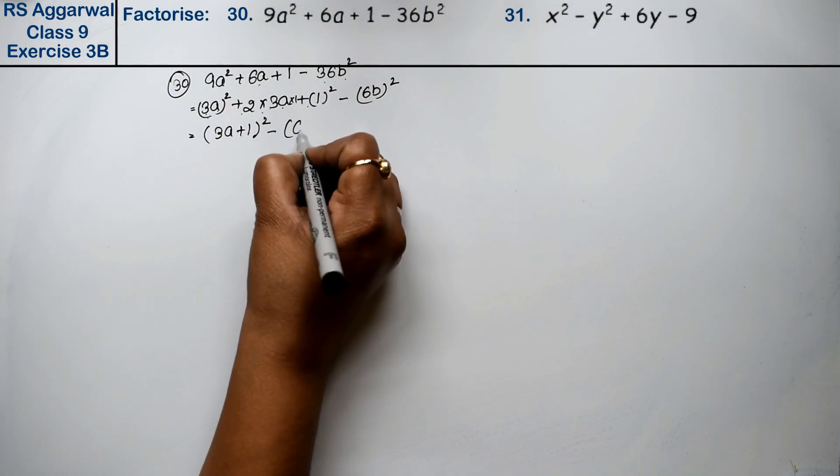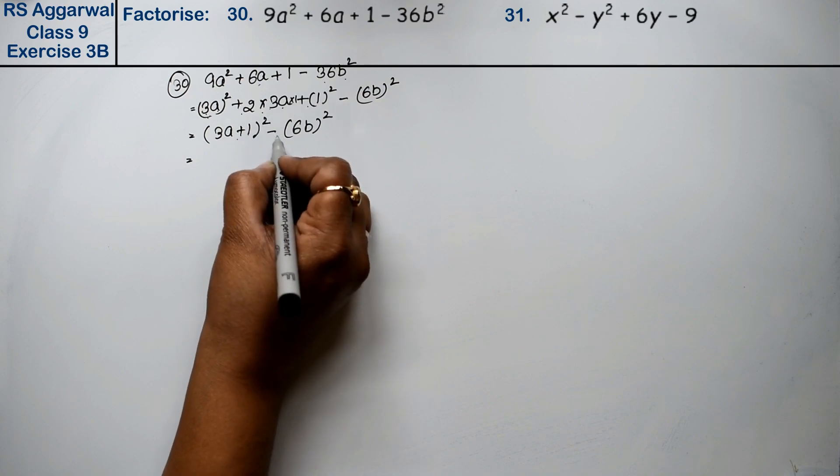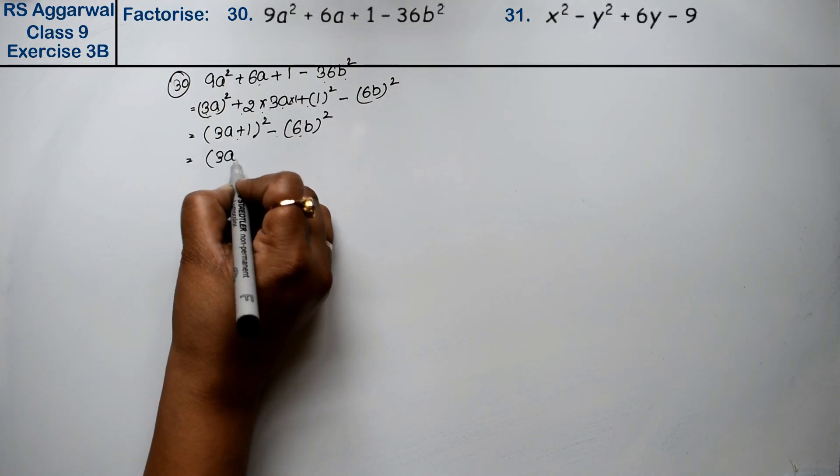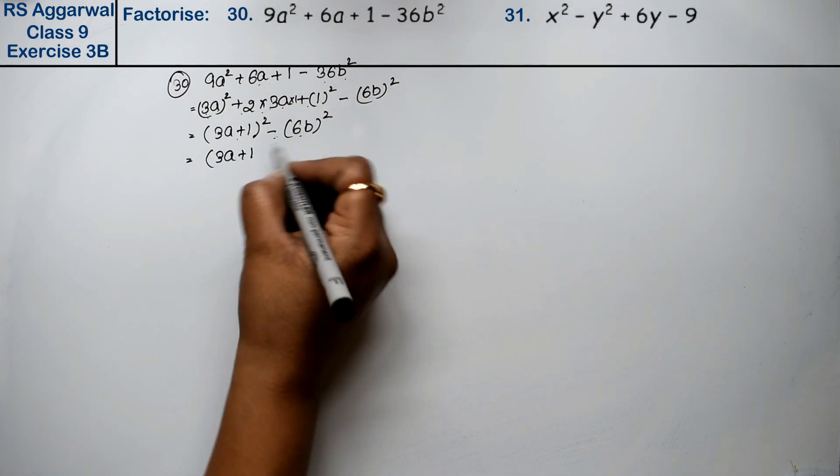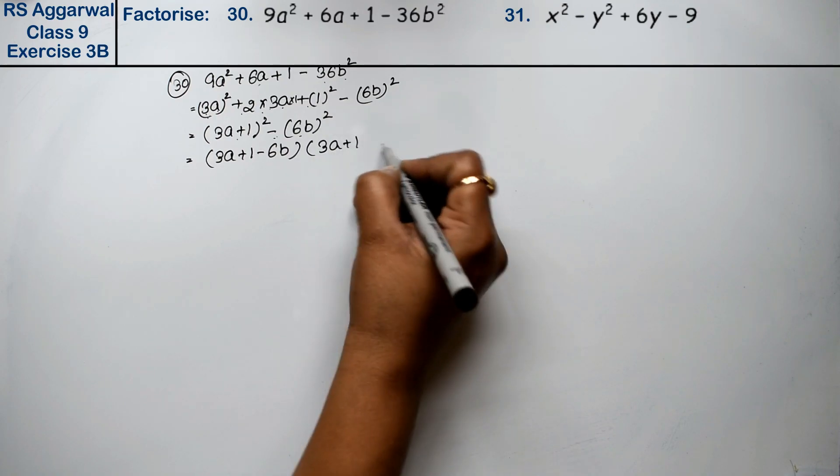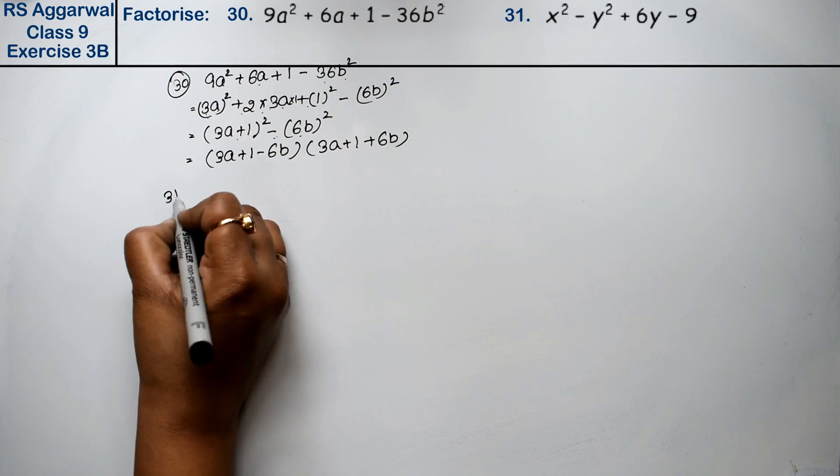Now which formula will we use? The a² - b² formula. What do we get? (3a + 1 - 6b)(3a + 1 + 6b) is the answer. Let's do question number 31.